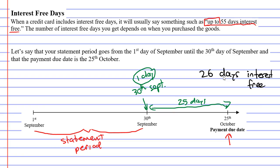So if you were in a situation where you wanted to buy something and it was the 30th of September — the end of the statement period — you would actually be better off purchasing it on the 1st of October. Just waiting one extra day, because that would be a new statement period, which means you would get 55 days interest-free. The reason is that when you go into the new statement period, the payment due date also changes.